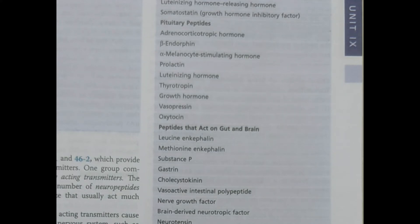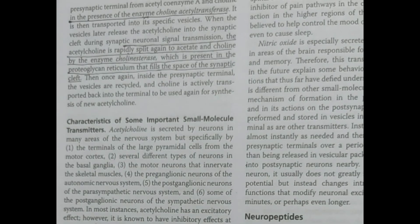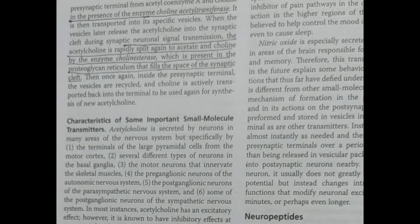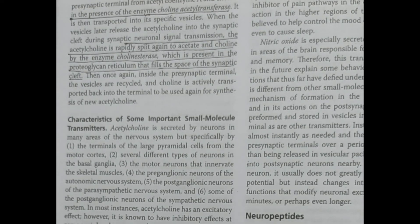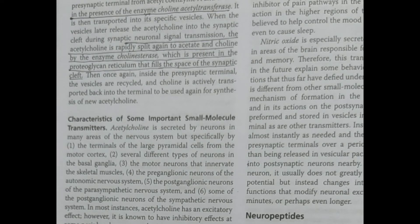Acetylcholine, as the most typical small molecule transmitter, is synthesized in the presynaptic terminal from acetylcholine enzyme and choline in the presence of enzyme choline acetyltransferase — very important for viva questions. When secreted into the postsynaptic terminal, it passes through the synaptic cleft where another enzyme, cholinesterase, splits it again into acetate and choline, helping in signal transmission.